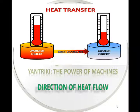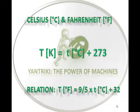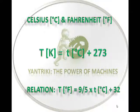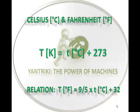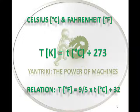Temperature also determines the direction of the flow of heat. Heat flows from a body at higher temperature to a body at lower temperature. The SI unit of temperature is Kelvin. The other unit is degree Celsius, and these are related as: temperature in Kelvin equals temperature in Celsius plus 273. There is another unit called degree Fahrenheit, related to Celsius as: temperature Fahrenheit equals 9/5 times temperature Celsius plus 32.